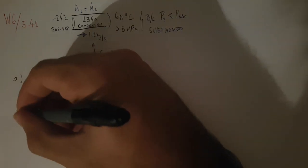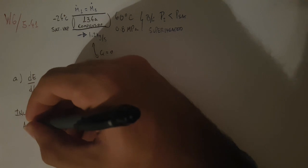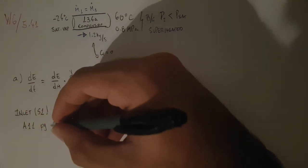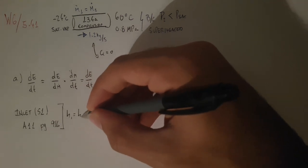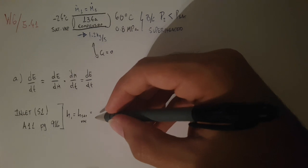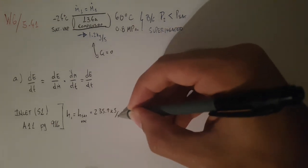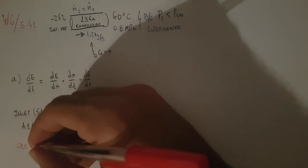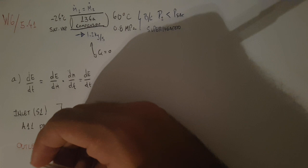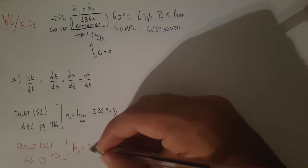Looking at the inlet, state one, we go to table A-11 on page 916. We grab h1, which is the enthalpy of saturated vapor, equal to 235.9 kilojoules per kilogram. On the outlet, state two, we look at table A-13 for superheated on page 920. Our h2 is 296.82 kilojoules per kilogram.